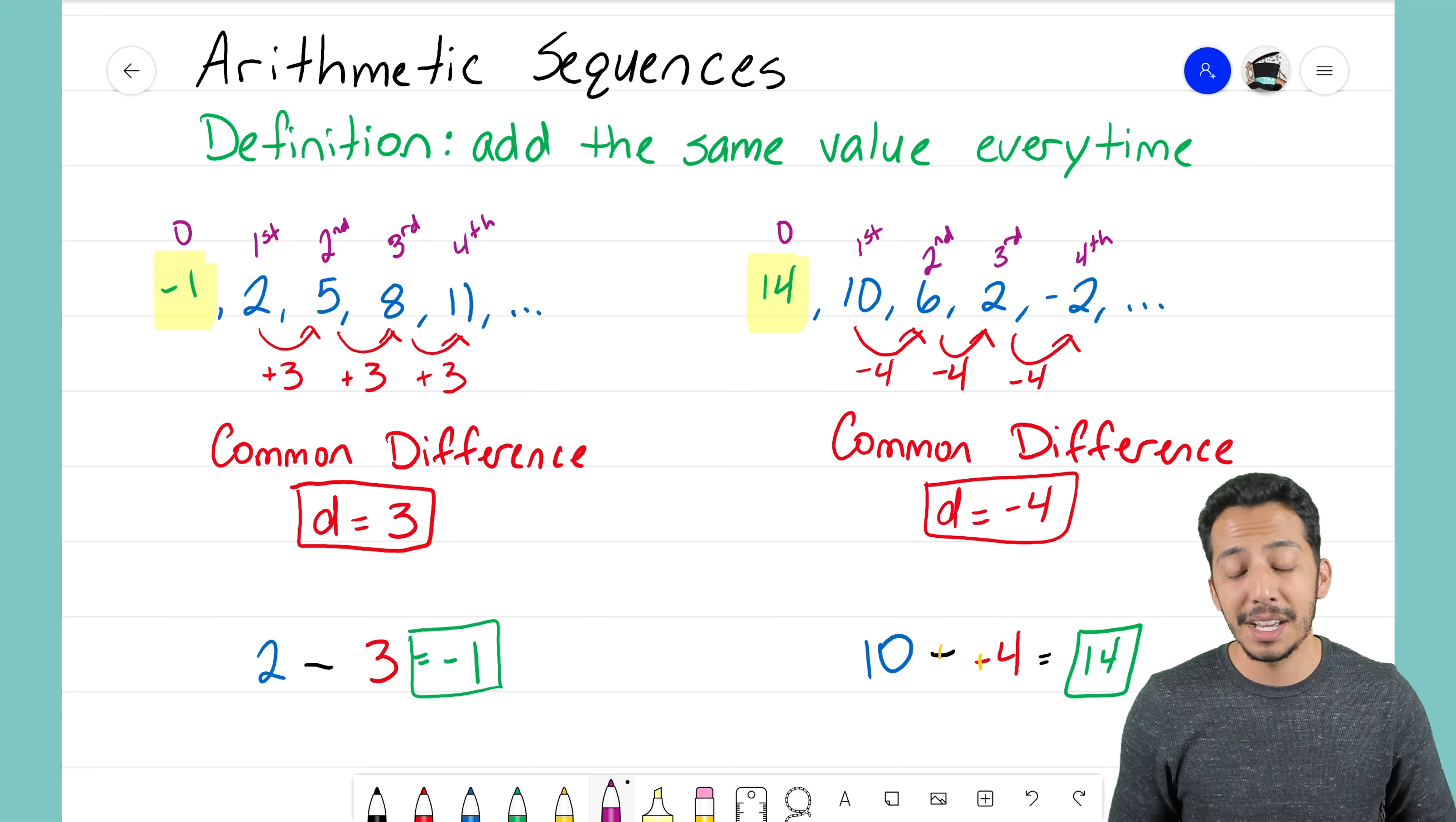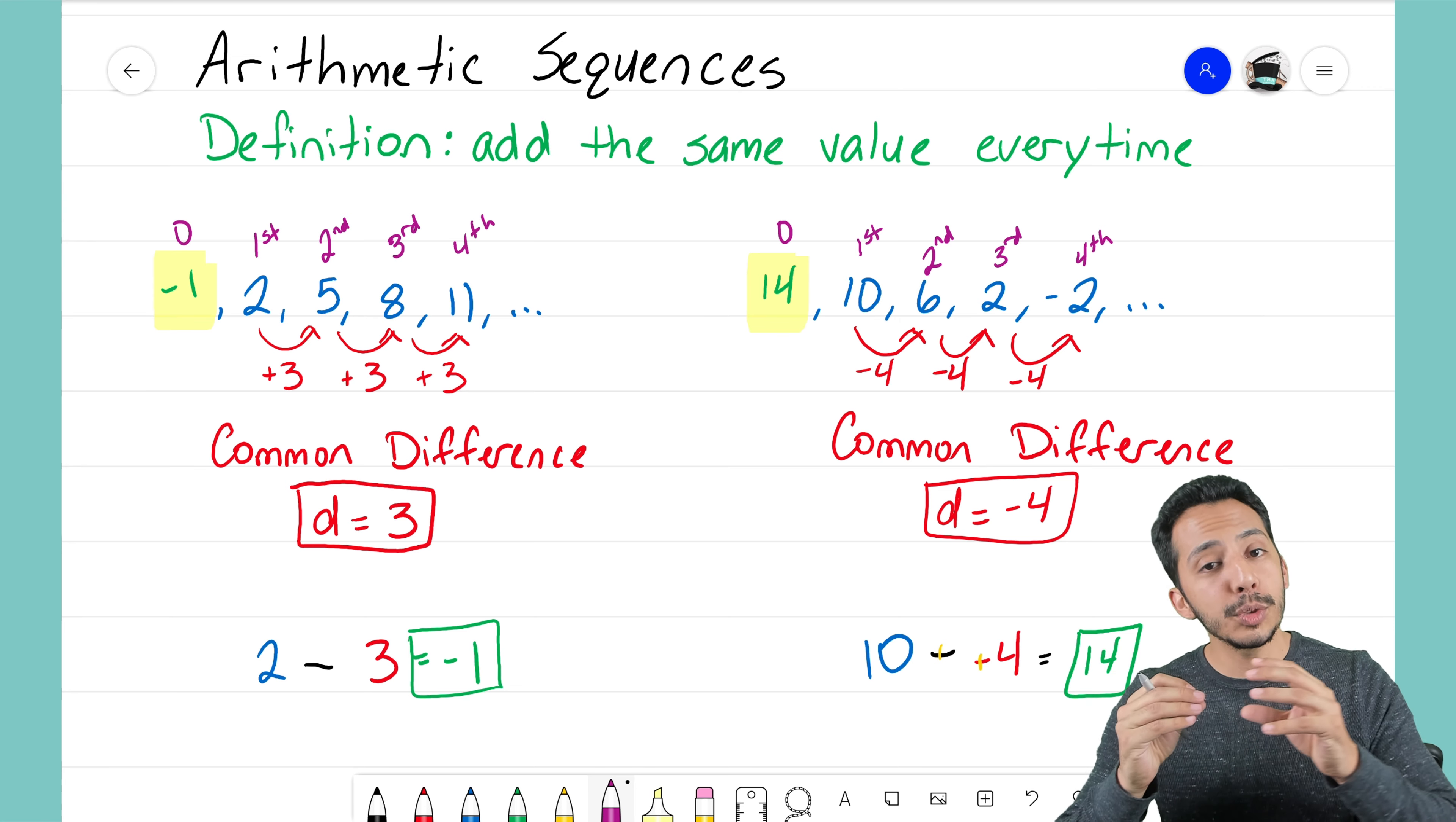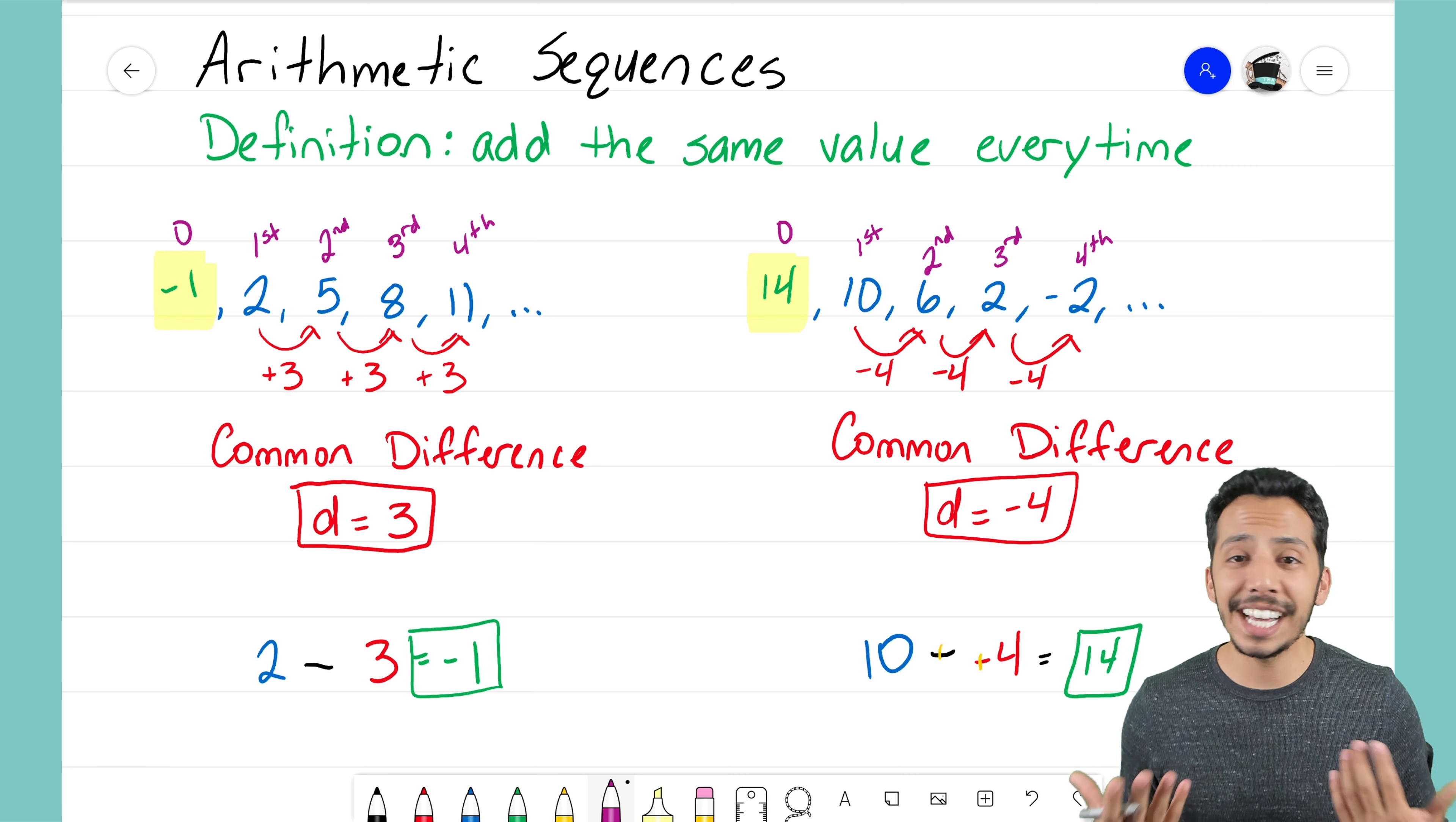Now on the sequence on the left, I started with 2, but that sequence was increasing. The numbers were getting bigger, so my zero term should be less than 2 there.